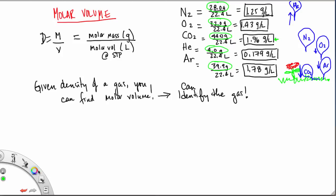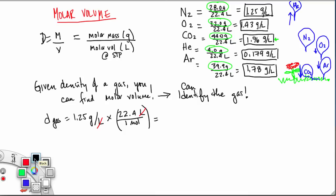Given the density of a gas, you can find the molar volume, which means you can identify the gas. If we have a density of 1.25 grams per liter and we want to find its molar mass, what we can do is multiply by 22.4 liters in one mole. Look what's happening if we consider this as a conversion factor. Look how the units are canceling out. I have liters here and liters here, they are canceling out, and I'm left with grams per mole. Those are the units for molar mass.